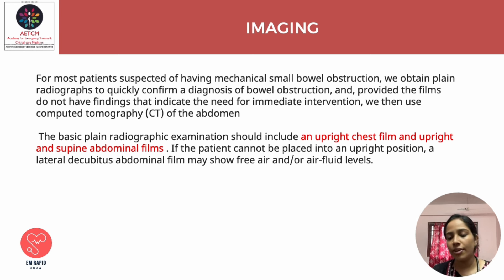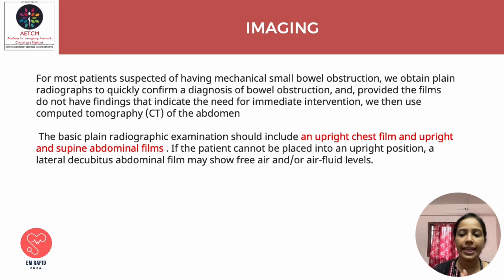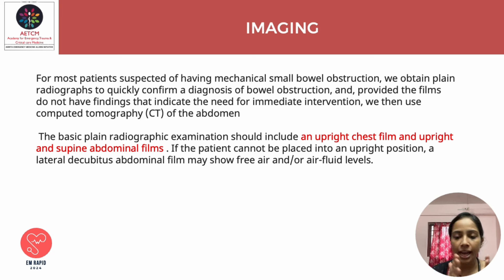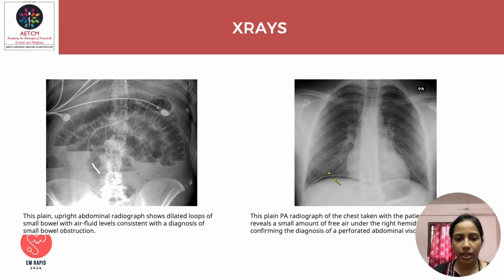The first and most important imaging in intestinal obstruction is plain radiography. Obtain an upright chest film, upright and supine abdominal films, or a lateral decubitus abdominal film if the patient cannot stand upright. If plain radiography does not confirm the diagnosis, proceed to CT of the abdomen.